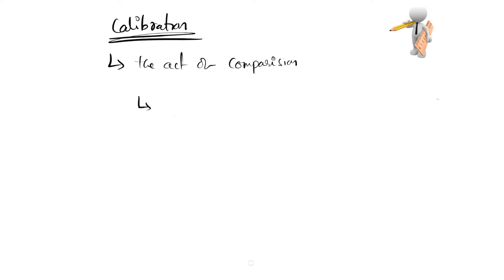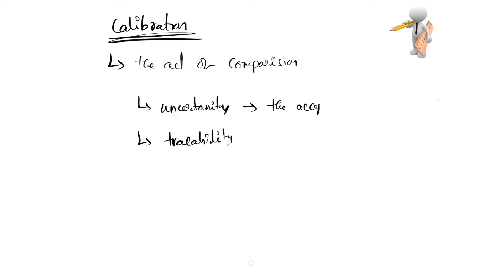There are two principles involved in ensuring whether the instrument is giving correct results or not. Those are uncertainty and traceability. Uncertainty is the acceptable error associated with the measuring instrument.